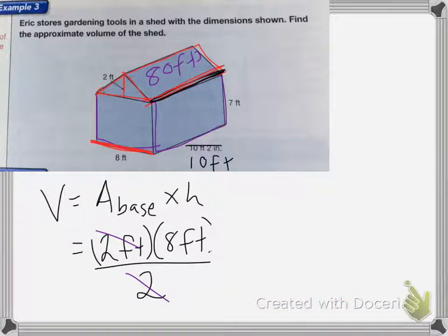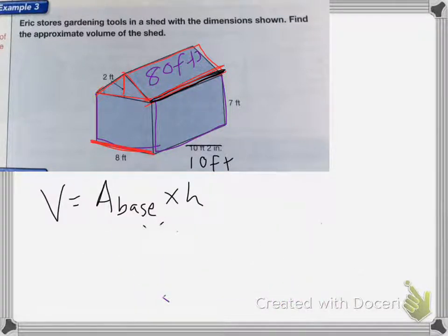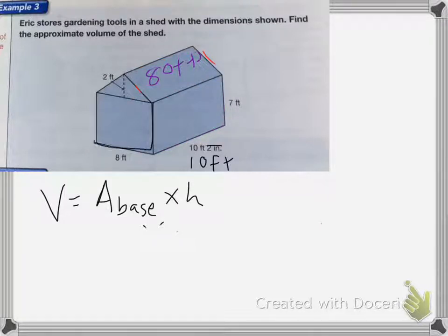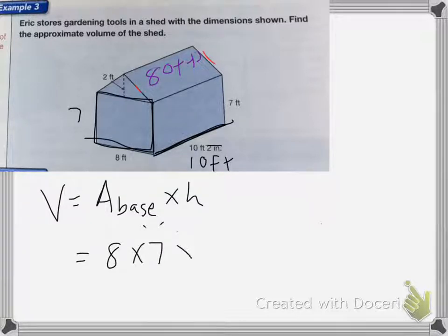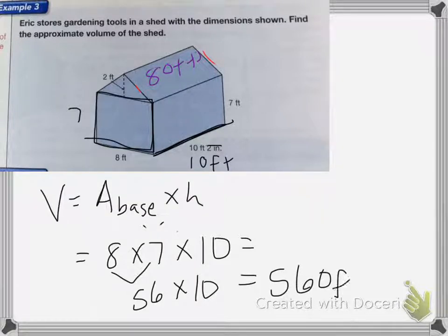Now I'm going to find the volume of the base. Again, the area of the base times the height of the object. The base of my rectangle is 8 feet by 7 feet, and then the height is that 10 feet. So the area of the base is going to be 8 times 7, and I'm going to times that whole thing by 10 feet. So 8 times 7 is 56, times 10 is 560 feet cubed.